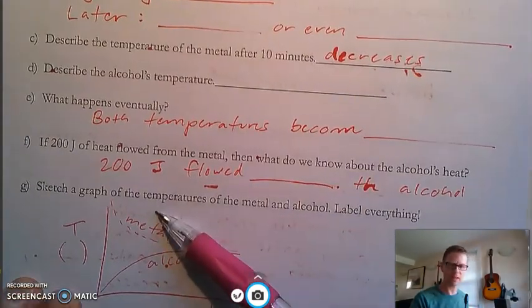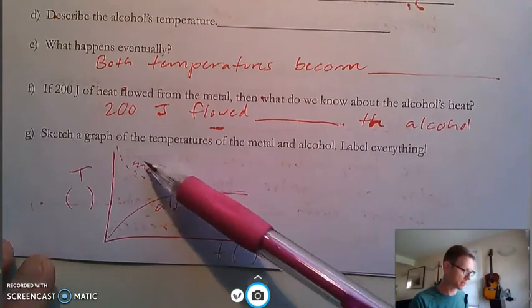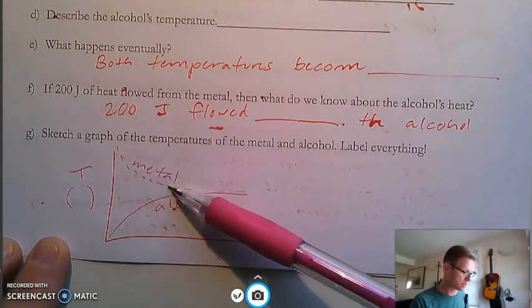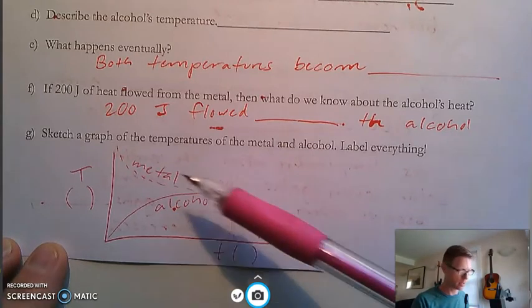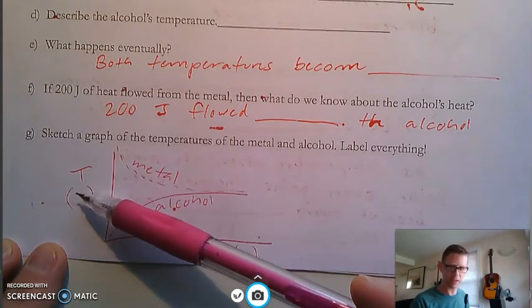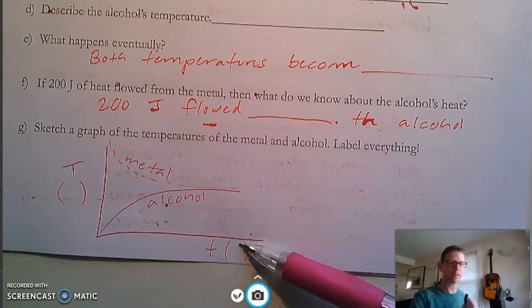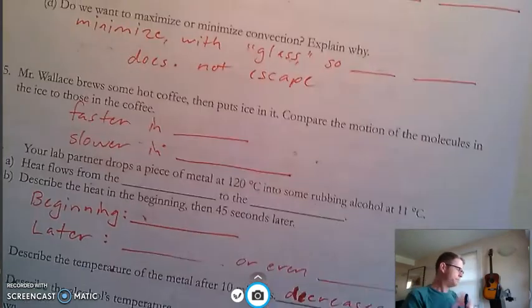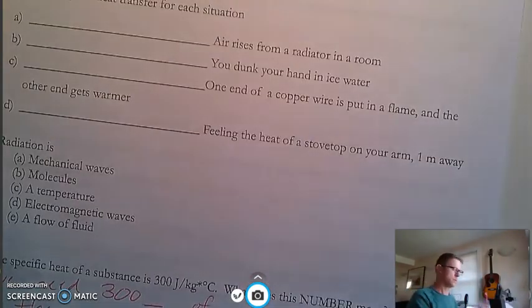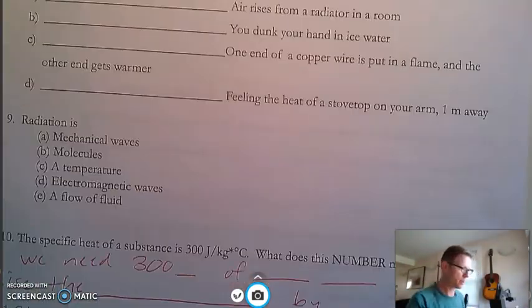Here's that classic diagram. Be ready to sketch this, where you have this nice downward curve of the metal, nice upward curve of the alcohol. Temperature is in degrees Celsius. That's degrees Celsius. That is time in seconds.